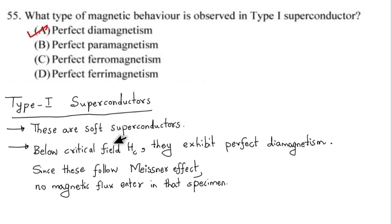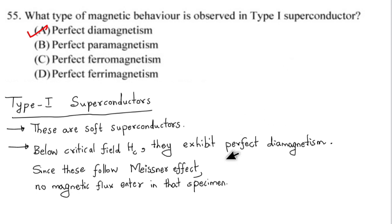In a type 1 superconductor, the critical field is low. The Meissner effect means the magnetic flux is completely expelled from inside the superconductor when it transitions to the superconducting state. This expulsion of magnetic flux corresponds to perfect diamagnetic behavior. Therefore, option number A is the correct answer: the magnetic behavior observed in a type 1 superconductor is perfect diamagnetism.